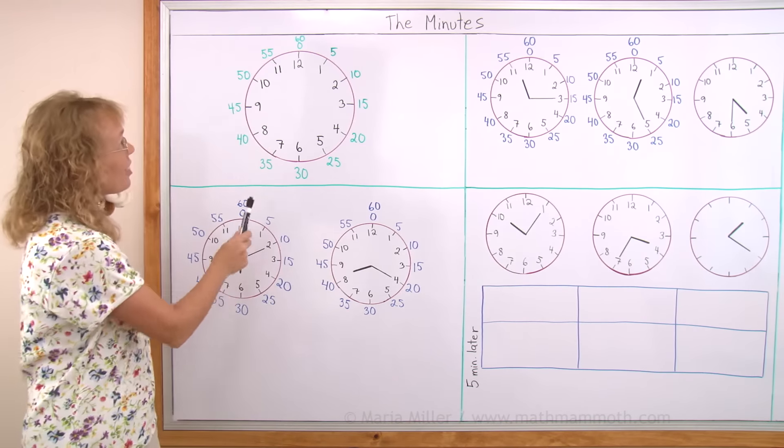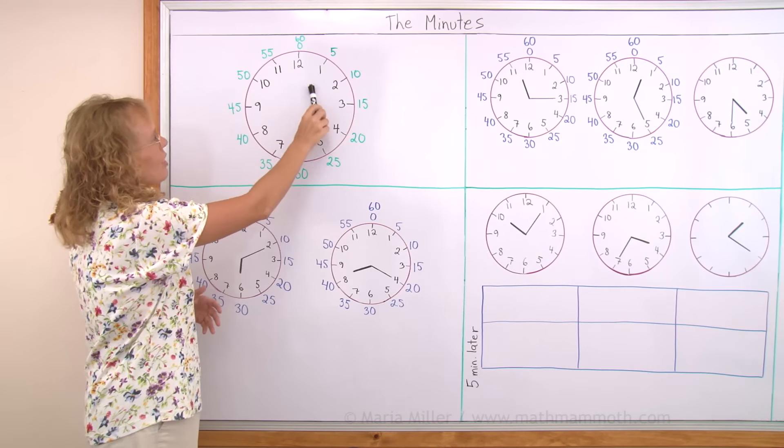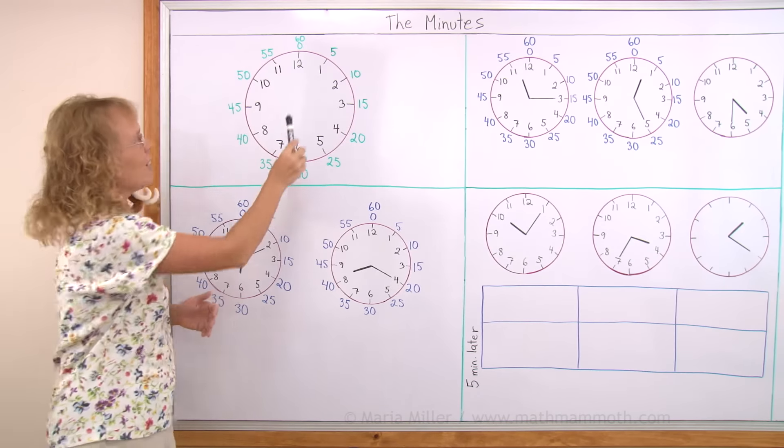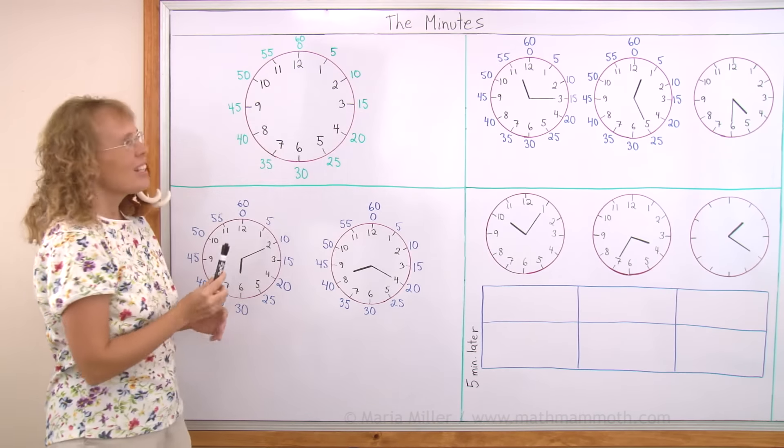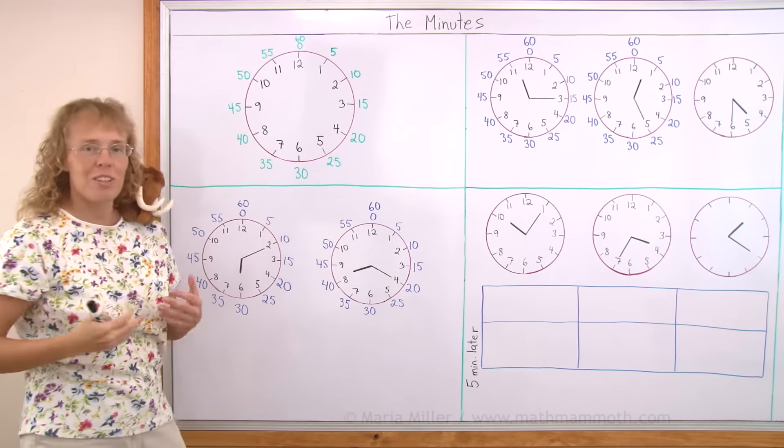I have here a very special clock, as you can see, because it has lots of numbers. It has the normal set of numbers for the hour hand, from 1 to 12. And then it has another set of numbers over here, and these are for the minute hand.